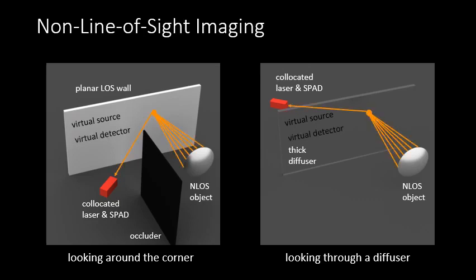Similarly, the sensor images a single point on the visible surface. This point receives light from all directions from the non-line-of-sight scene, acting as a virtual sensor.